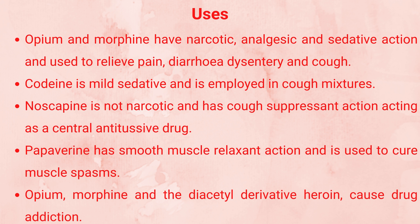Opium alkaloids generally have narcotic analgesic effects, sedative action, and relieve pain. They are also used as cough suppressants and in the treatment of diarrhea. Morphine has very potent narcotic analgesic effect. Codeine, being a mild sedative, is used in cough mixtures as an antitussive. Noscapine is also used as an antitussive for suppressing cough. Papaverine has a smooth muscle relaxant effect and is used for treatment of muscle spasm. Morphine and its derivative heroin cause drug addiction, so cultivation is done only by government-licensed entities under the control of the government.